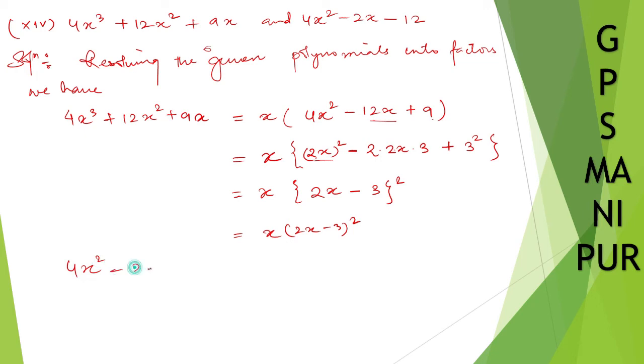Let me take the next one: 4x² - 2x - 12. So this one I cannot take square like this. So I need to split the middle term. So 6 times 2 is 12, so 4 times 3 is 12.